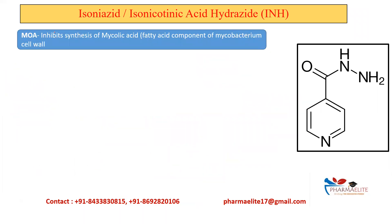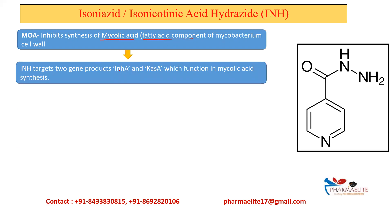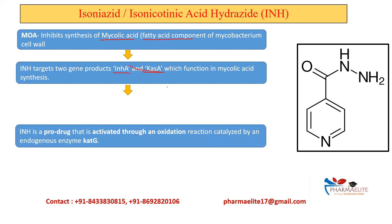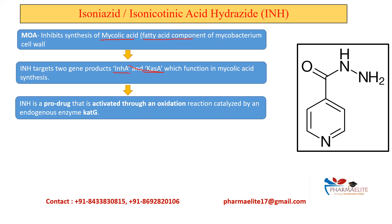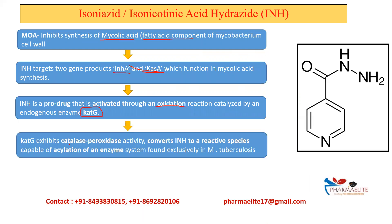Next is mechanism of action. Isoniazid mainly inhibits the synthesis of mycolic acid, which is a fatty acid component of the mycobacterium cell wall. Two genes mainly involved in mycolic acid synthesis are INHA and CASE, and Isoniazid mainly targets these two genes. Isoniazid is a prodrug and it gets converted into its active form through oxidation. For this, we need an enzyme called catalase peroxidase coded by the gene KATG. This enzyme converts Isoniazid into its active form, which is capable of acylation of enzymes found in Mycobacterium tuberculosis.